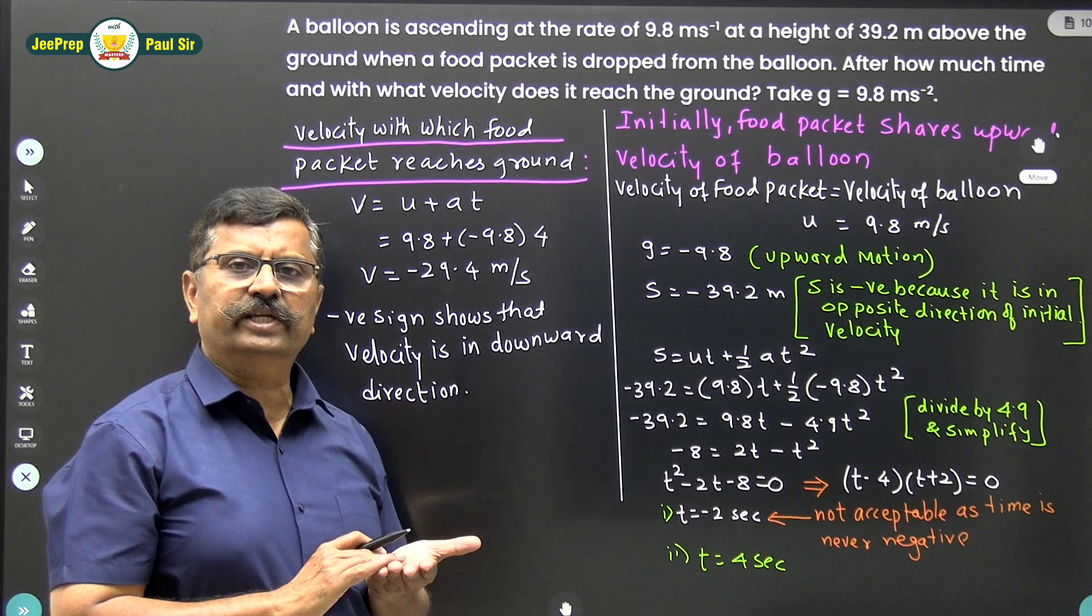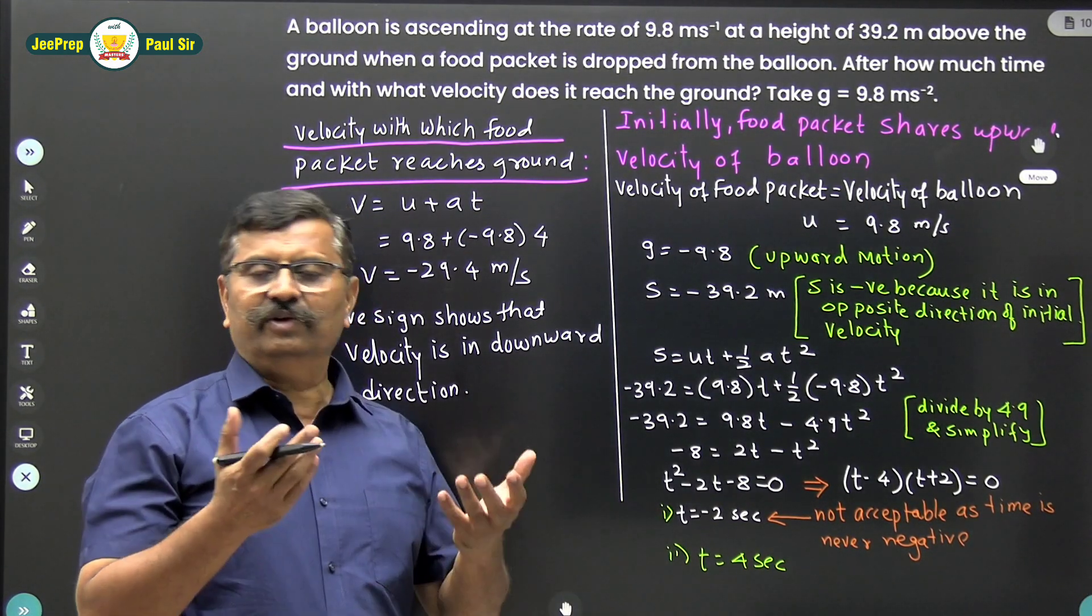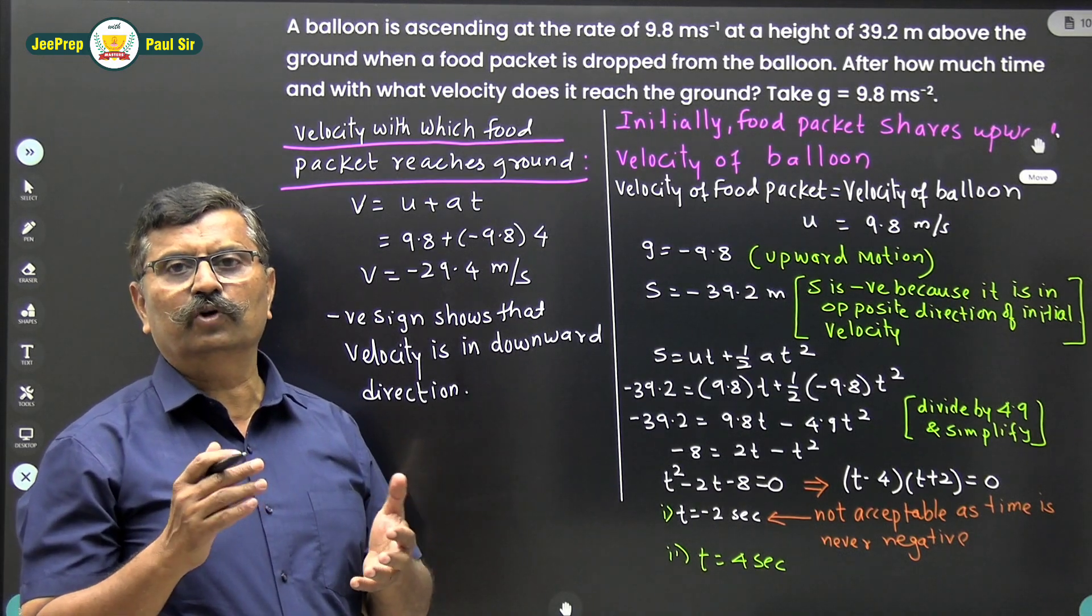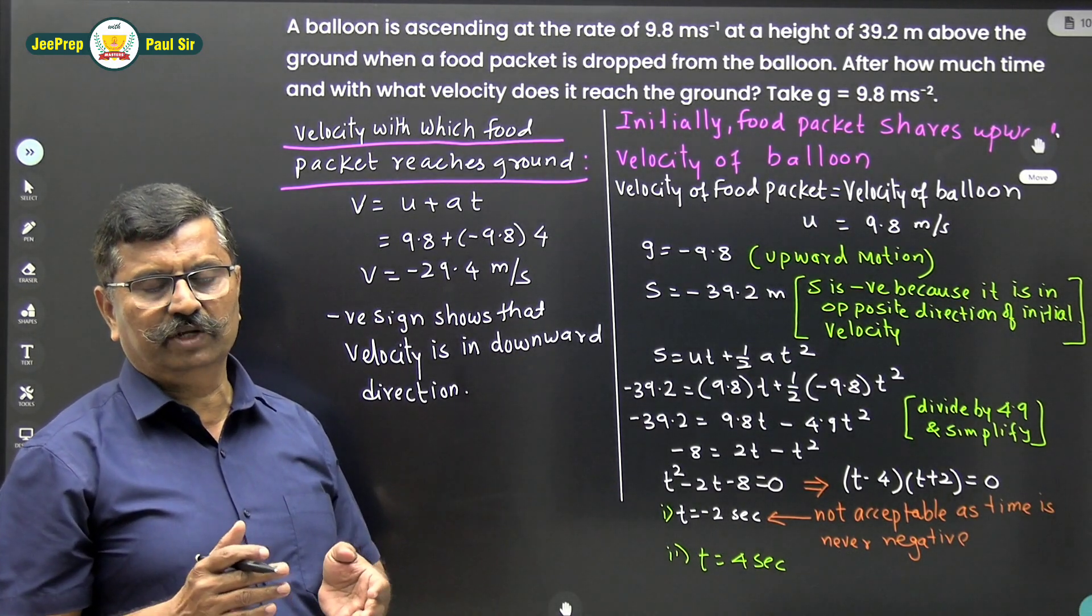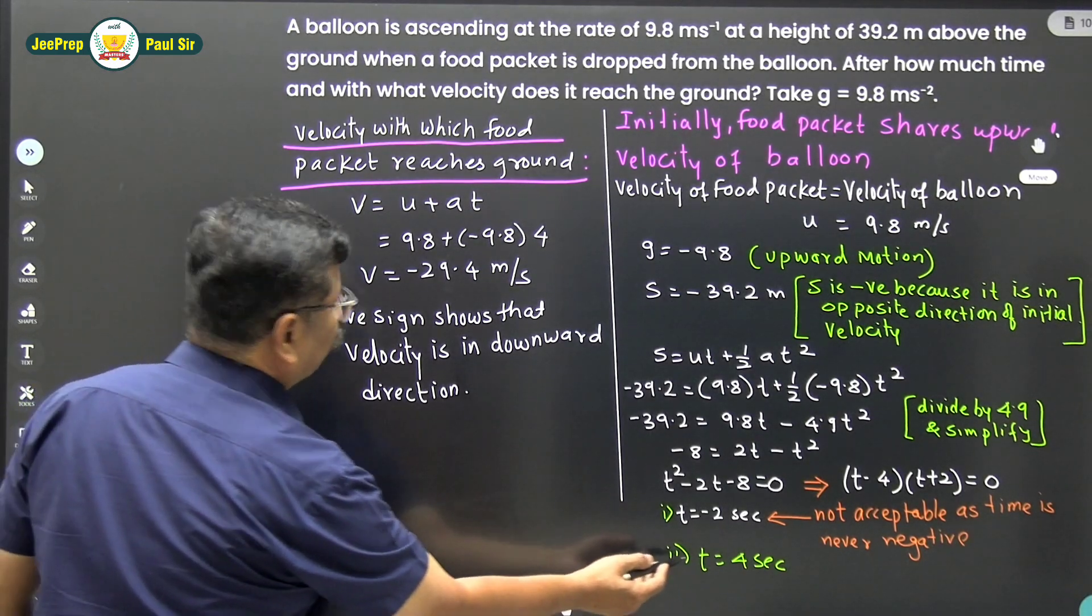One is t equals 4 seconds and t equals minus 2 seconds. Time can never be negative, therefore t equals minus 2 seconds is not acceptable. Hence the correct value is 4 seconds.